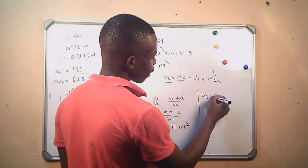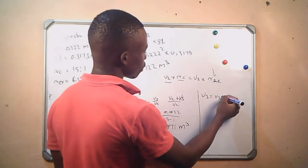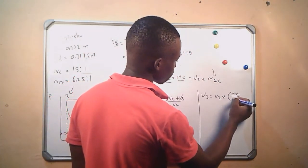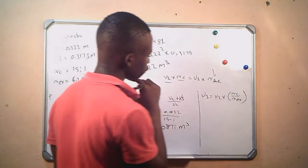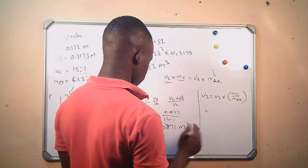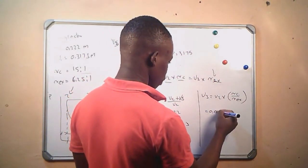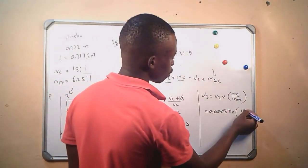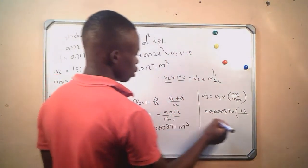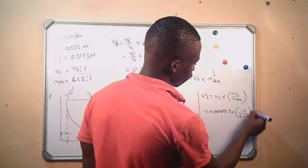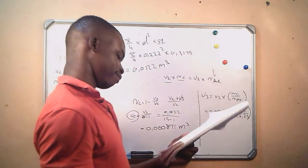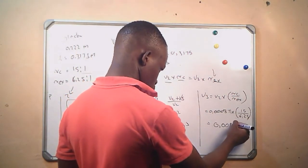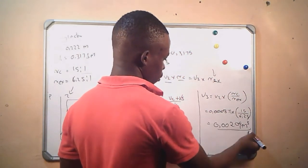V3 equals V2 times the compression ratio divided by the expansion ratio. Substituting values: V3 = 0.000871 × 15 ÷ 6.25, which gives us V3 = 0.00209 cubic meters.